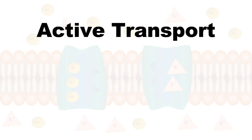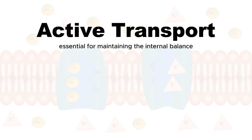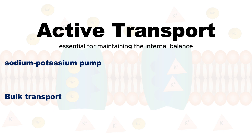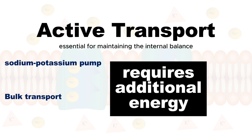Active transport mechanisms are essential for maintaining the internal balance of cells and allowing them to perform vital functions. Both the sodium-potassium pump and bulk transport are examples of active transport, meaning they require energy to move substances. However, they operate in different ways.